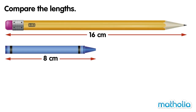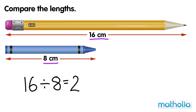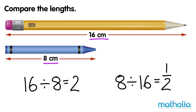Compare the lengths. The length of the pencil is sixteen centimetres. The length of the crayon is eight centimetres. Sixteen divide eight equals two. The pencil is twice the length of the crayon. Eight divide sixteen equals one half. The crayon is half the length of the pencil.